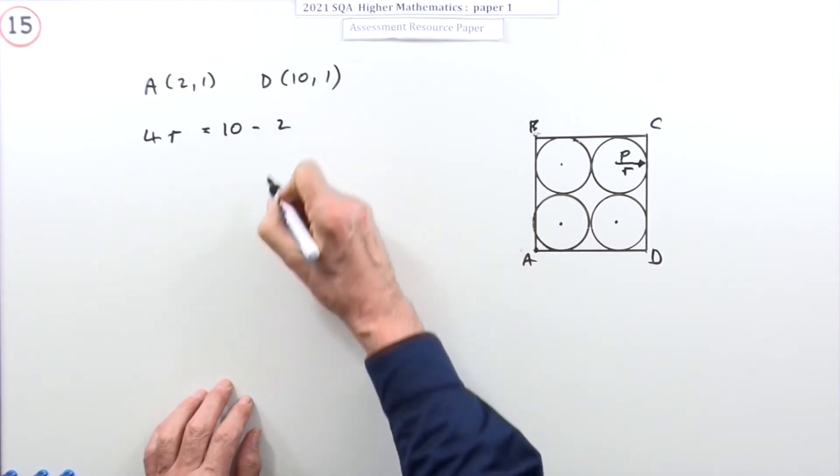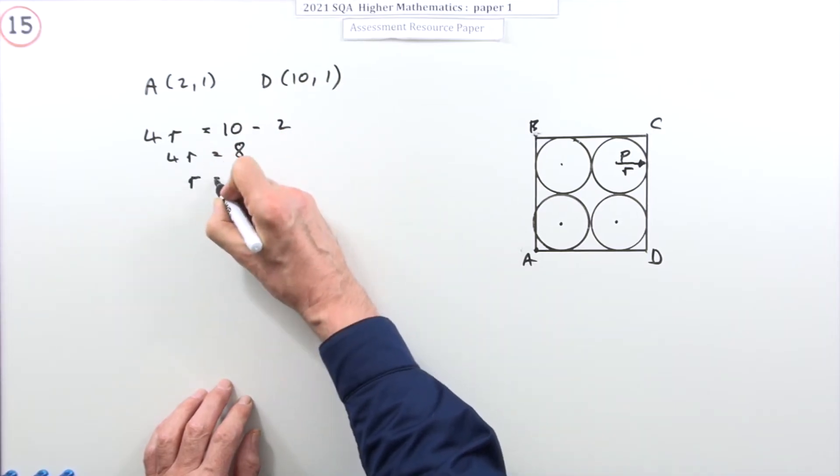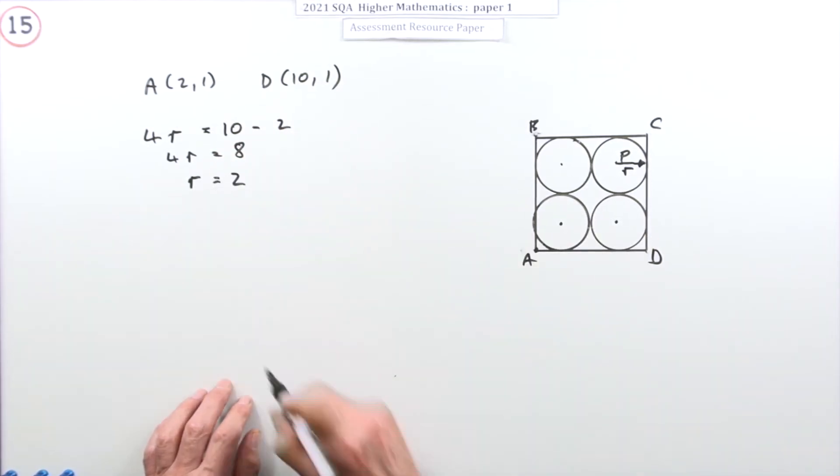Showing the working, that's 10 take away 2. So four lots of r is going to be 8. That means the radius of each of these circles is 2.